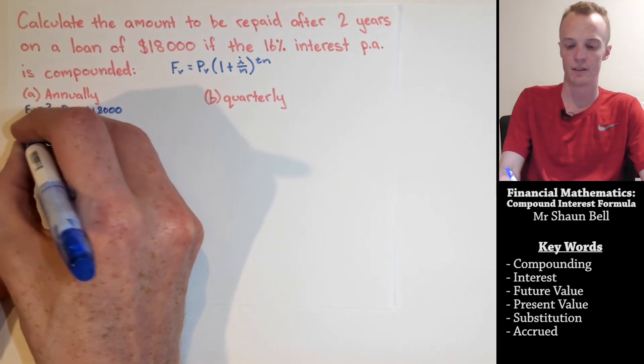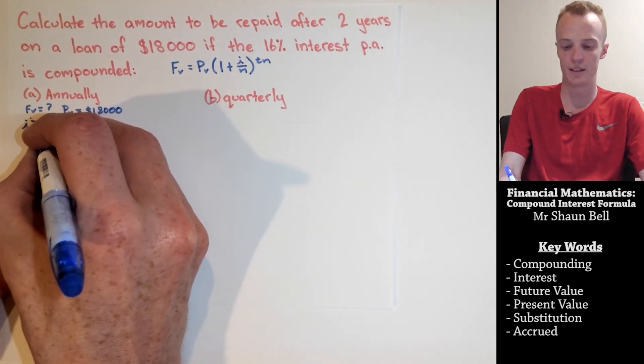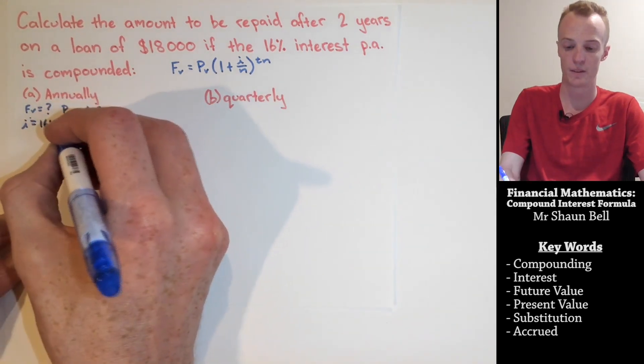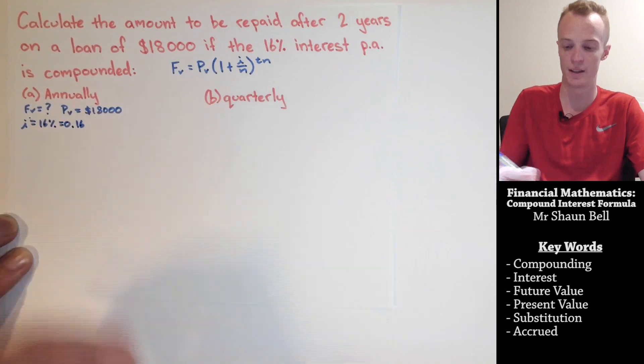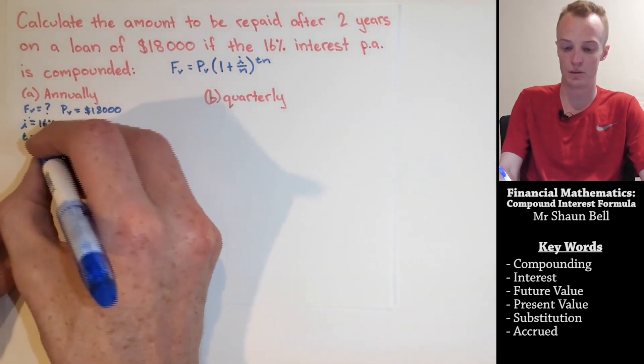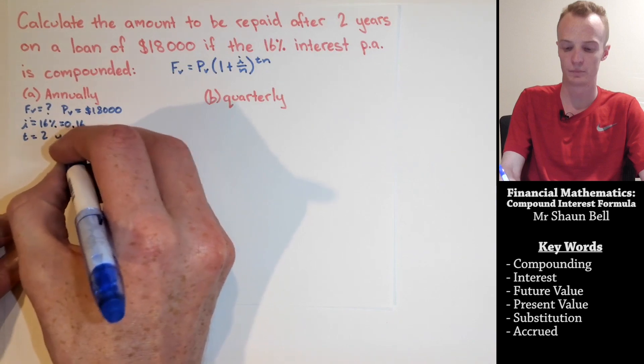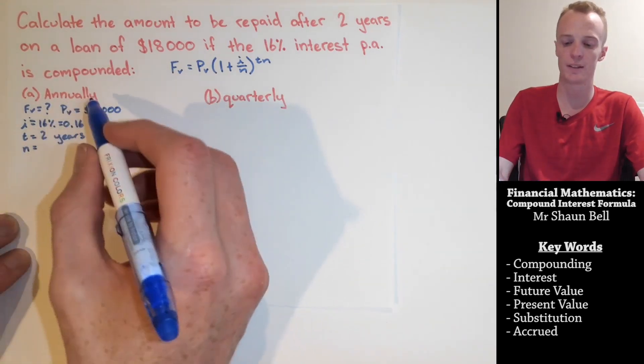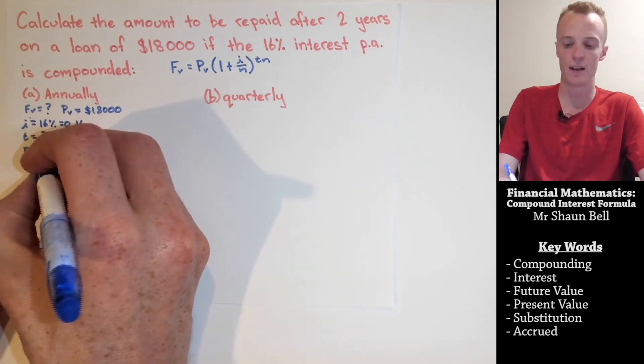The interest is equal to 16%, however, we need that as a decimal, so that's equal to 0.16. The time is equal to 2 years. And for the n value, because it's annually, it's going to be equal to 1.